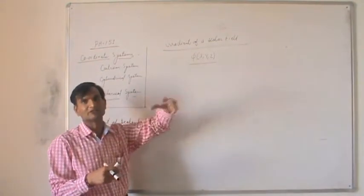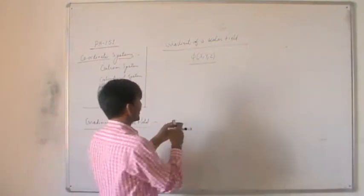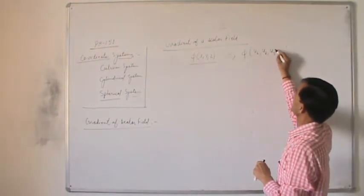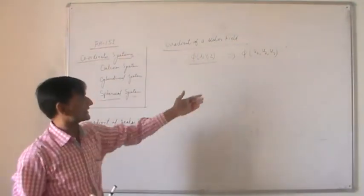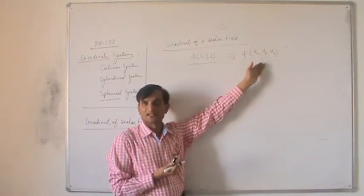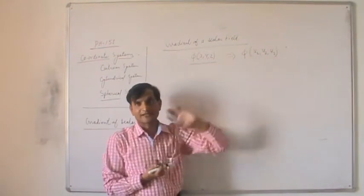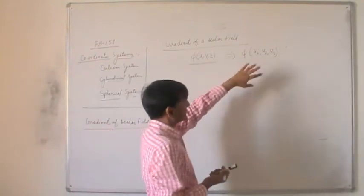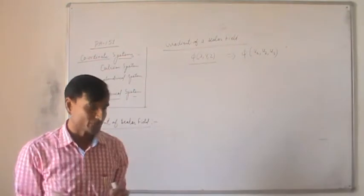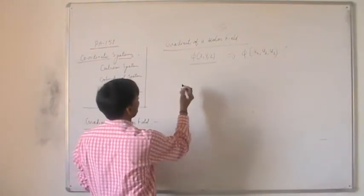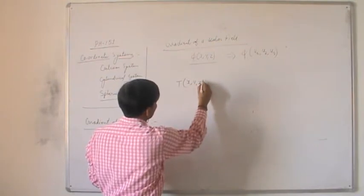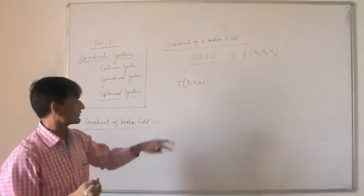Similarly, you can define a vector field — a vector quantity defined for the whole space. In the general coordinate system, phi is a function of u1, u2, u3, which may be x, y, z in Cartesian, or rho, phi, z in cylindrical. We want to define the gradient operation. I will use temperature T as an example, starting from the Cartesian system, then generalizing.